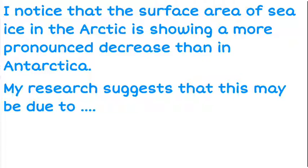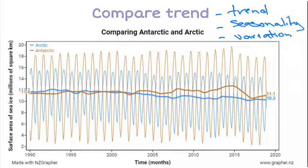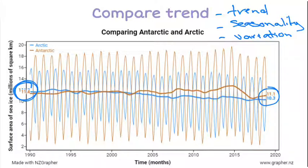This is where I would jump onto Google and do some research to try and explain why there is a bigger, quicker reduction over the same period of time in the Arctic. From the beginning of the data in 1990 they were both at very similar levels, whereas by the end there is a much bigger difference between the values. So I'd want to find out why there might be a bigger difference — what's different about the Arctic versus the Antarctic.